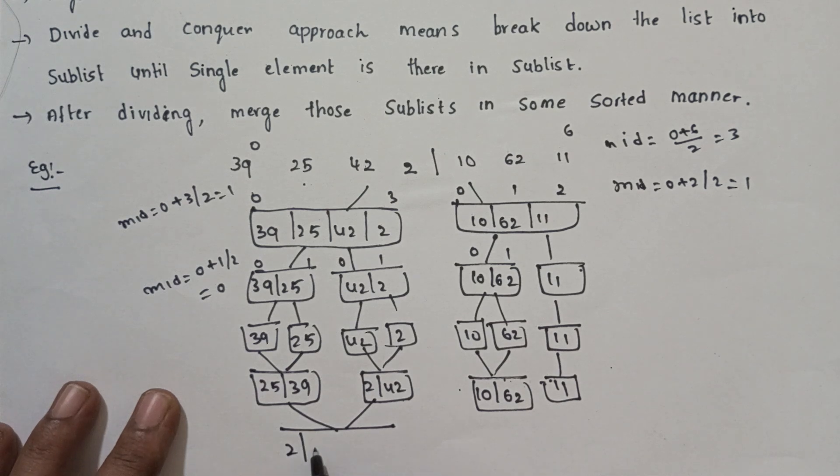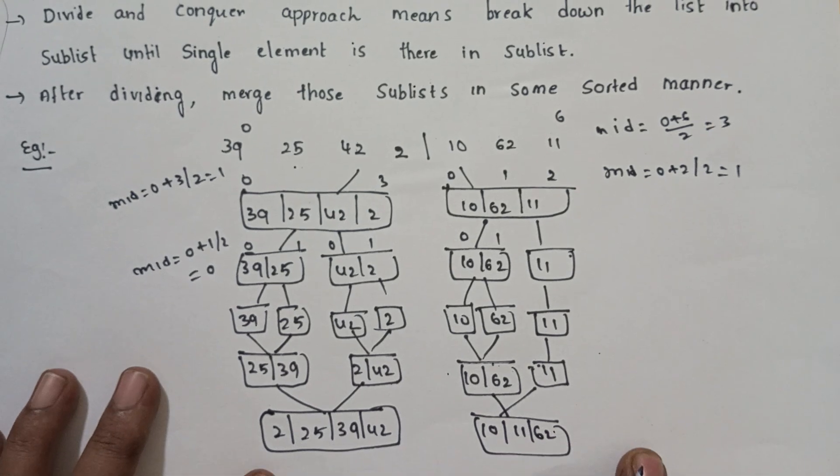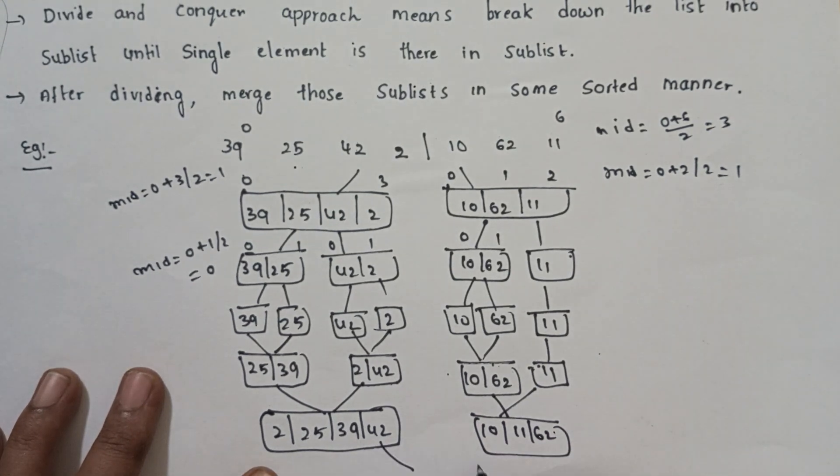Now we need to combine. So we combine the sublists: 2, 25, 39, 42. This is 10, 11, 62. Now the final is the 2 sublists sorted.